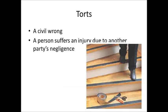The next type of law is tort law, and tort law is a civil wrong — that's when a person suffers an injury due to another person's negligence. For example, if a person was eating a banana and left a banana peel on the floor, and a person behind them slips on the banana peel and breaks their neck, then the person who was originally eating the banana would be held responsible for that person's injuries.